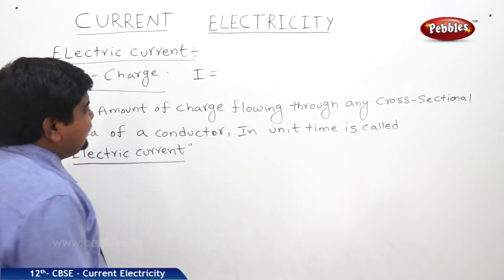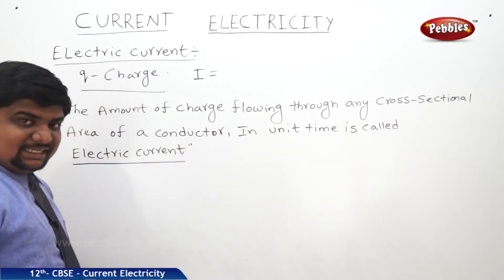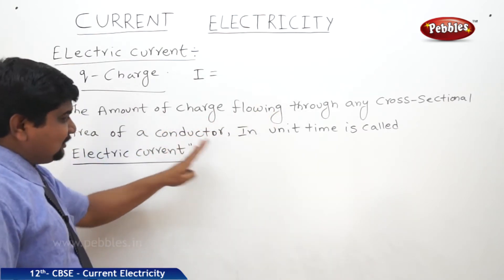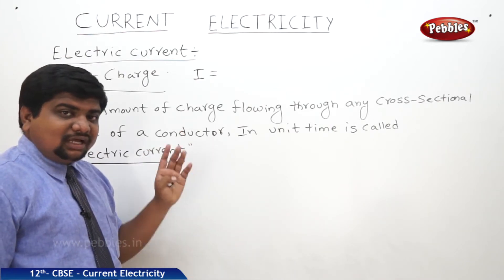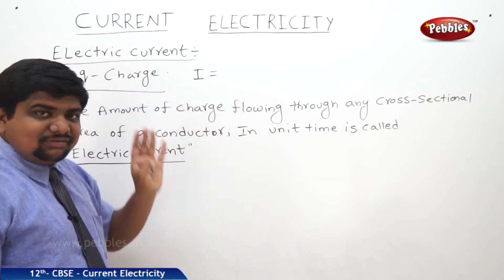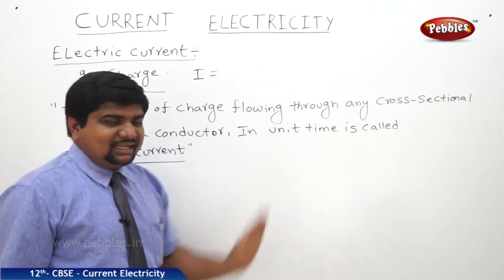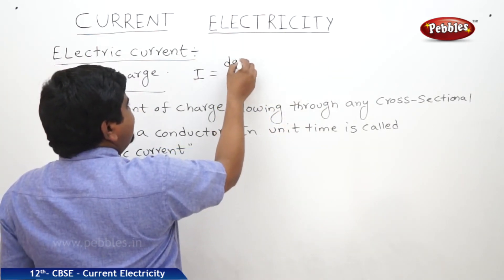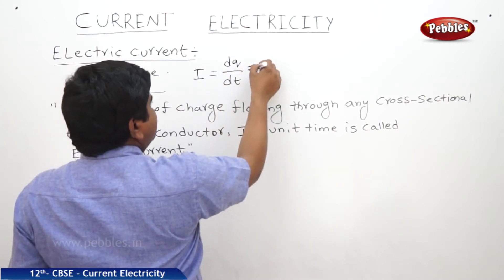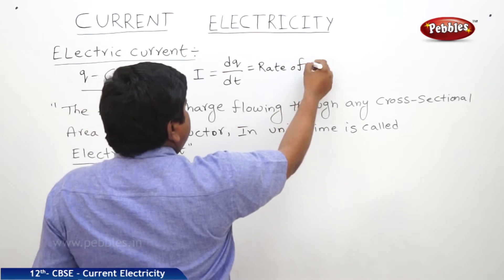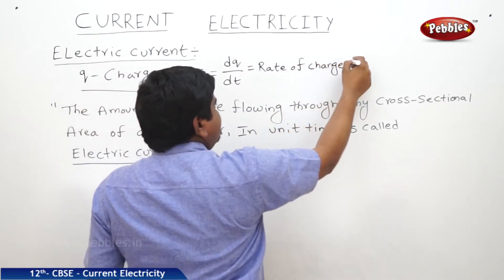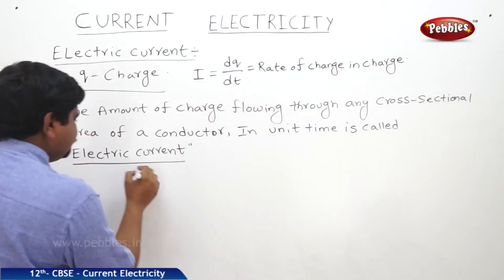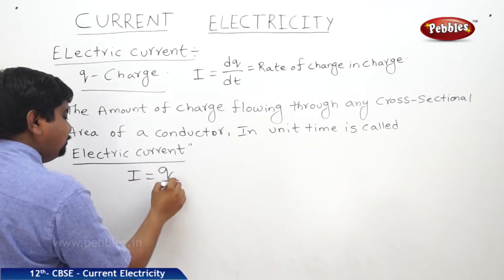The symbol of electric current is I. From the definition, we can write an equation: I is equal to the rate of change in charge. A conductor is a material which can respond to the flow of charges and electrons. In other notation, we can write I = Q / T.